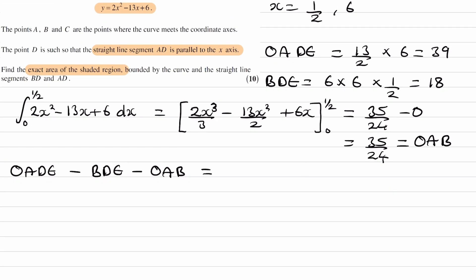This will then be OADE is 39, BDE is 18, and OAB is 35 over 24. And that gives 469 over 24, which is the final answer.